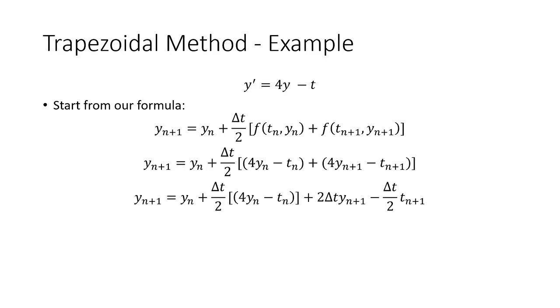So we'll start by expanding out our delta t over 2. So we get this 2 delta t y sub n plus 1 term minus delta t over 2 times t sub n plus 1. We're going to bring this term over to the left side, like so. And then everything else stays on the right side.